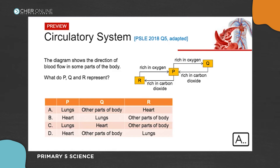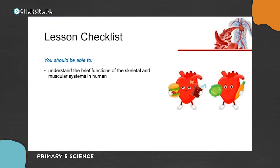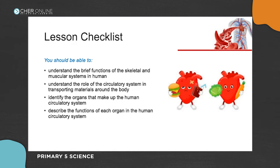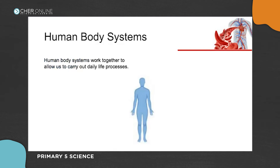Today's lesson: we're going to understand the brief functions of the skeletal and muscular systems in humans. Even though this topic is about the circulatory system, we still need to know the other human body systems. We'll also understand the role of the circulatory system in transporting materials, identify its organs — for example, are the lungs part of it? — and describe the functions of each organ.